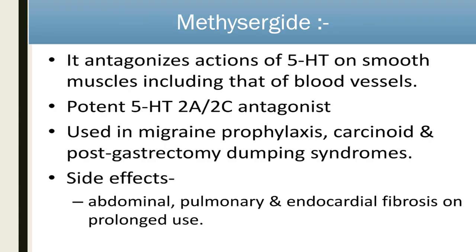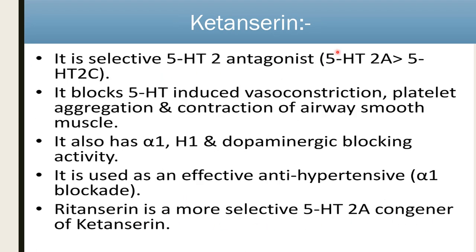Methysergide acts on 5-HT receptors on smooth muscle including blood vessels. It is a potent 5-HT2A and 2C receptor blocker used in migraine prophylaxis, carcinoid, and post-gastrectomy dumping syndrome. Side effects include abdominal, pulmonary, and endocardial fibrosis on prolonged use. Ketanserin is a 5-HT2 antagonist that blocks 5-HT2-induced vasoconstriction, platelet aggregation, and contraction of airway smooth muscle. It also acts on alpha-1, H1, and dopaminergic blocking activity, and is useful as an antihypertensive by blocking alpha-1 receptors. Ritanserin is a more selective 5-HT2A congener than ketanserin.